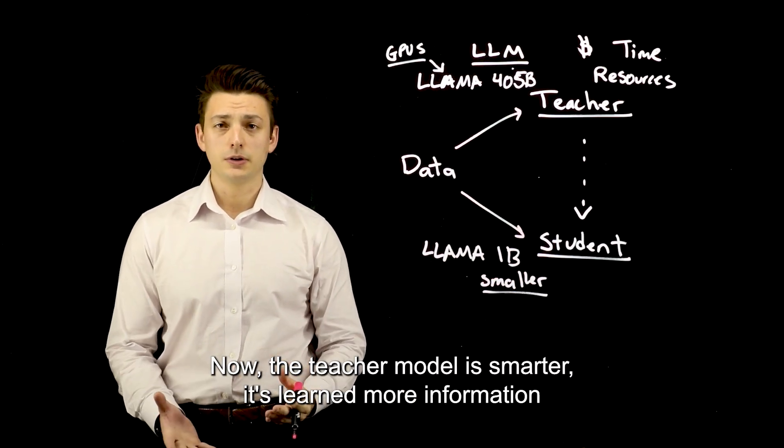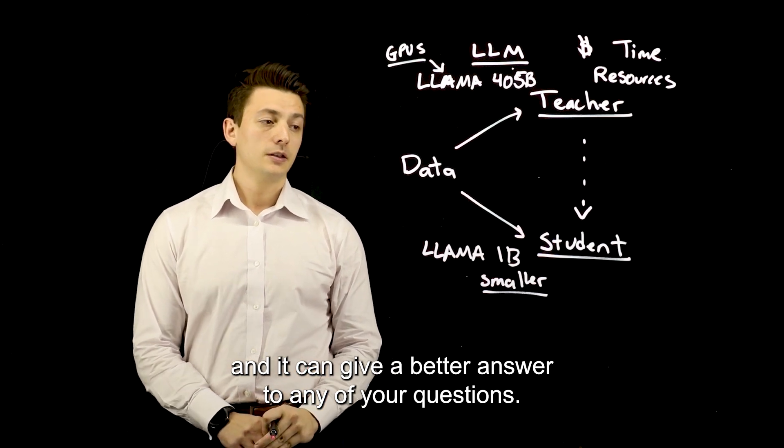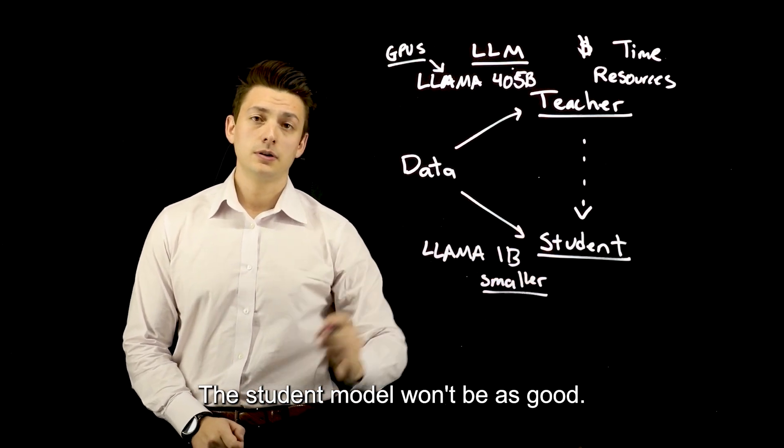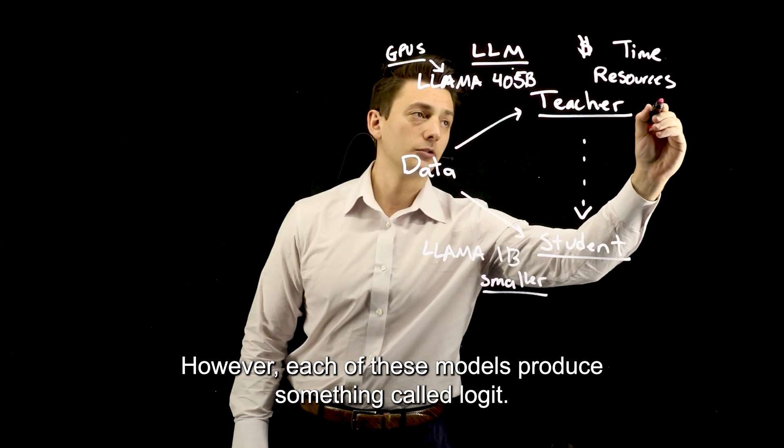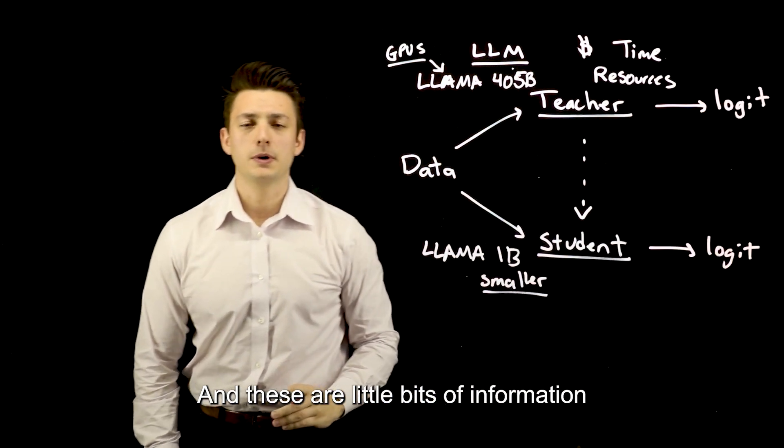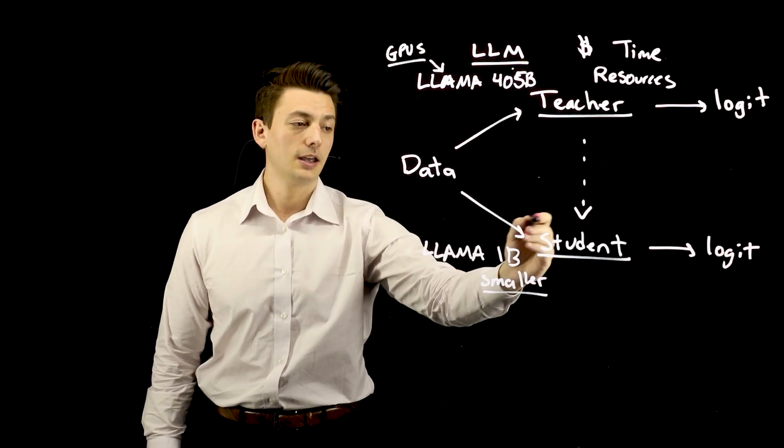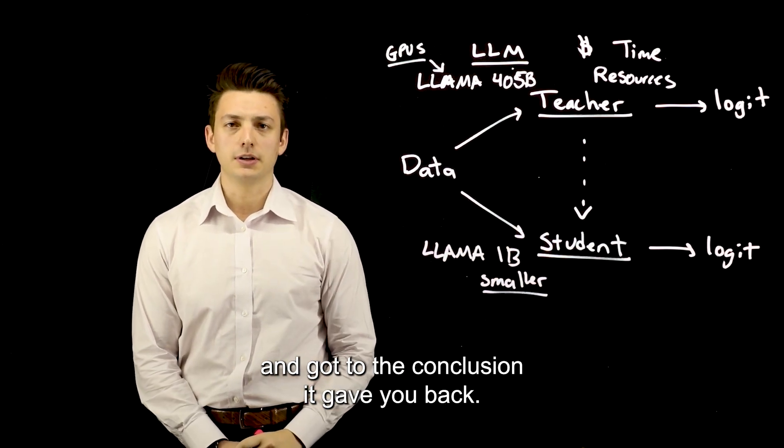The teacher model is smarter, it's learned more information, and it can give a better answer to any of your questions. The student model won't be as good. However, each of these models produce something called logits. And these are little bits of information that go in to have the detail of how the model actually thought and got to the conclusion it gave you back.